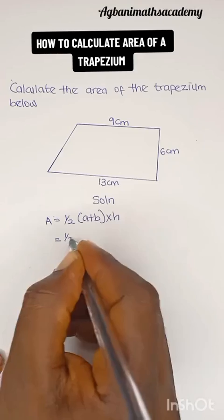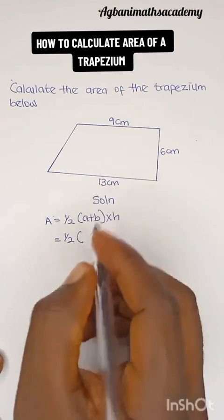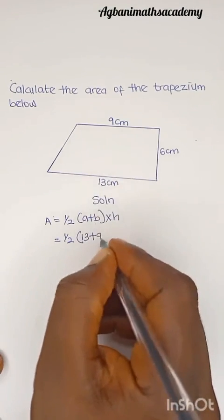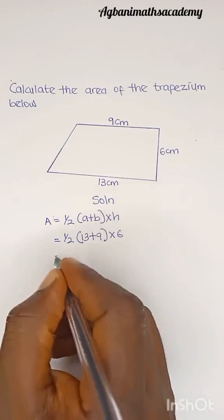So A is equal to half into 13 plus 9 multiplied by 6.